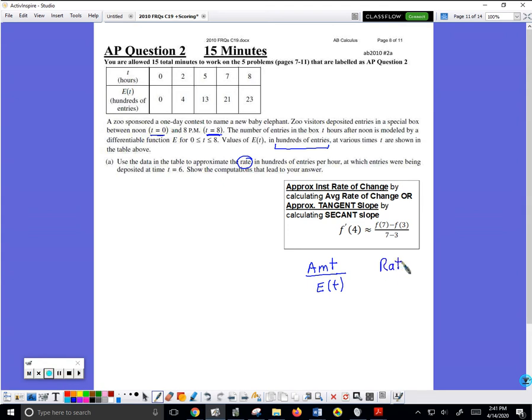The rate would be e prime, the rate at which the entries, the rate in hundreds of entries per hour at which the entries were being deposited. So e represents how many entries have been deposited at different times. We are looking for the rate, we are looking for e prime.